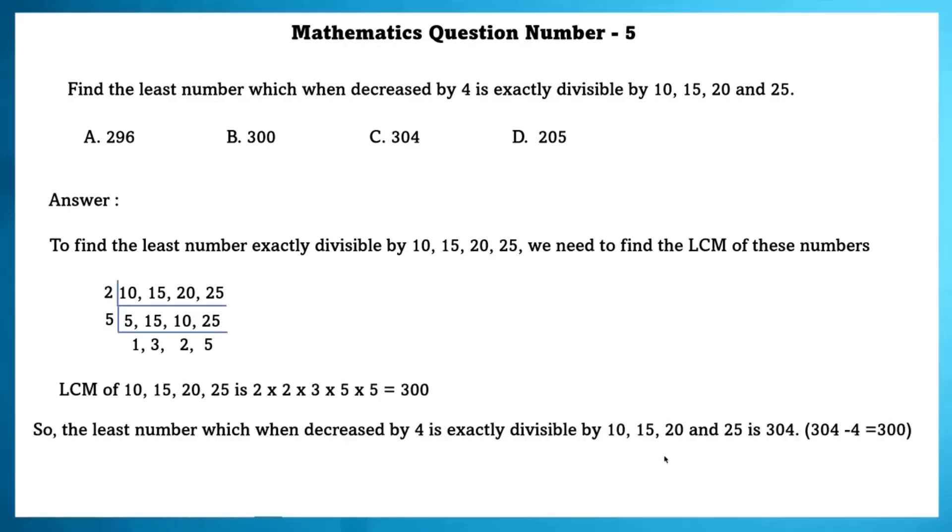So the least number which when decreased by 4 is exactly divisible by 10, 15, 20 and 25 is 304.